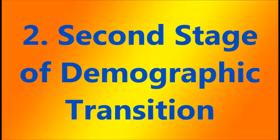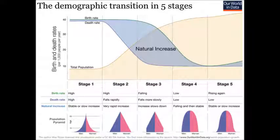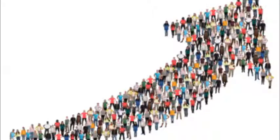India is now passing through the second stage of demographic transition, where the death rate is lower but birth rate is higher, leading to high population growth. The birth rate in 2010 was 22.1 and death rate was 7.2 per 1,000 people, implying a net addition of about 15 people per 1,000, which is quite high.